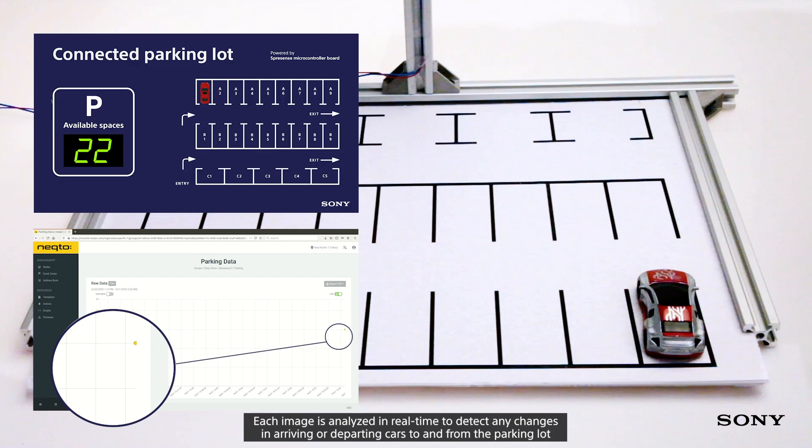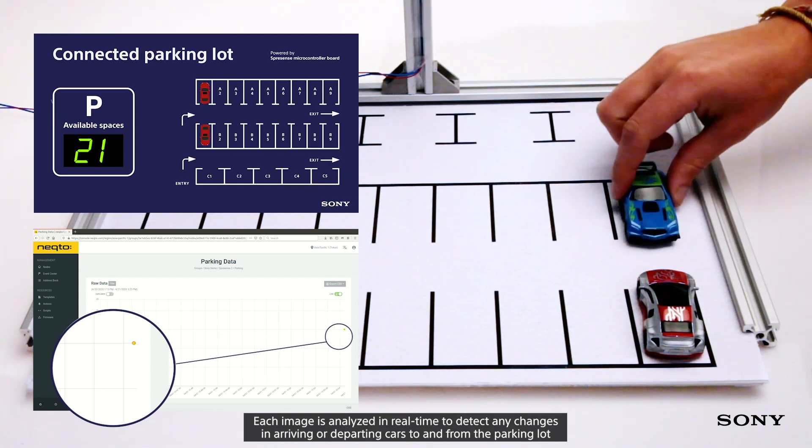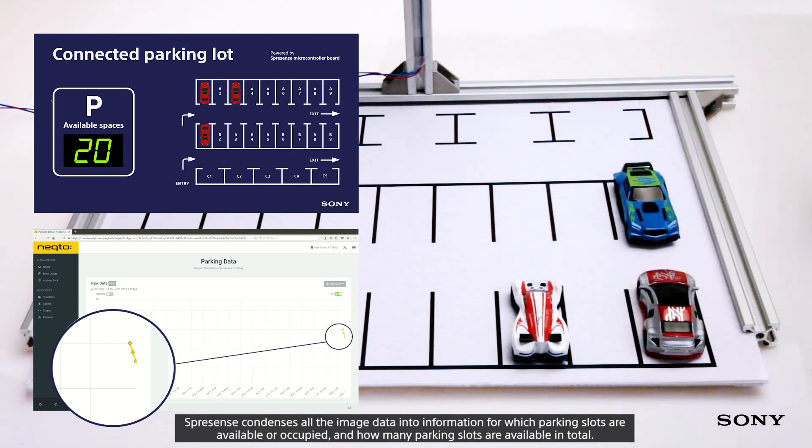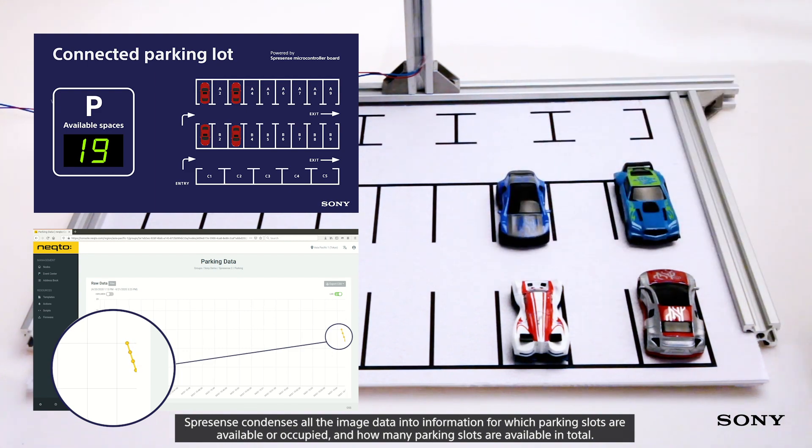Each image is analyzed in real-time to detect any changes in arriving or departing cars from the parking lot. Spresense condenses all of the image data into information for which parking slots are available or occupied and how many.